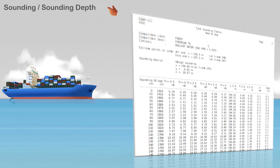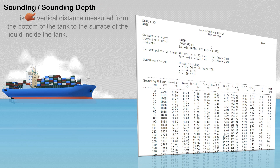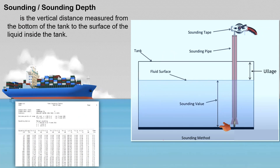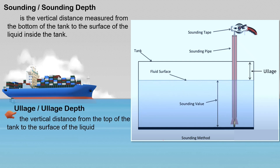The term sounding, or sounding depth, is the vertical distance measured from the bottom of the tank to the surface of the liquid inside the tank. And the vertical distance from the top of the tank to the surface of the liquid is ullage, or ullage depth.